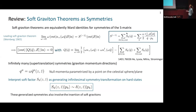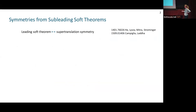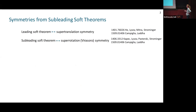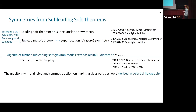At the leading case, we have equivalence to supertranslation symmetry. The subleading soft theorem is equivalent to superrotation or Virasoro symmetry, and together these form the extended BMS symmetry with Poincaré as a global subgroup. Going to further subleading terms in the soft expansion, one result is that the algebra of further subleading soft graviton modes extends a chiral half of Poincaré to the infinite symmetry algebra known as W1-plus-infinity — chiral because we look at one graviton polarization at a time, at tree level with minimal coupling.